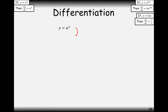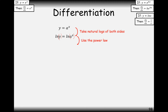For y equals a to the power of x, this is a slightly more complicated rule, and you need to know how to prove it. The first thing we do is take logs of both sides — so we put a ln in front of both sides. We've still got the same expression, just with ln applied to both sides. Now we manipulate the right-hand side using the laws of logs: we take out the x as a power to make it a scale factor multiplier at the front, giving ln y equals x times ln a.